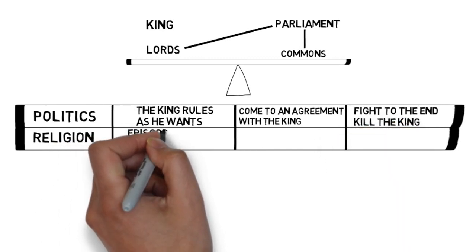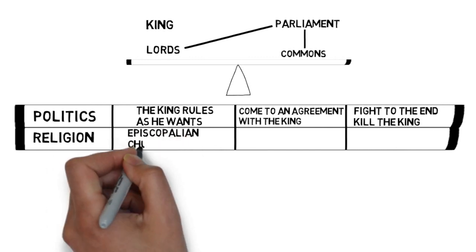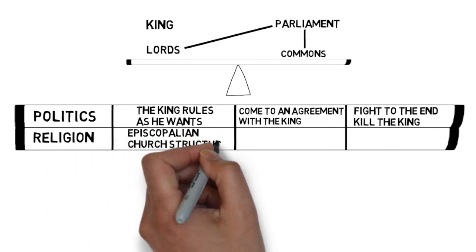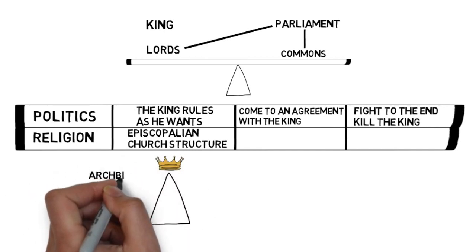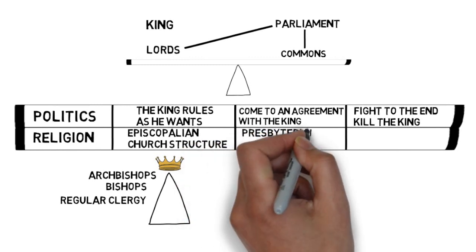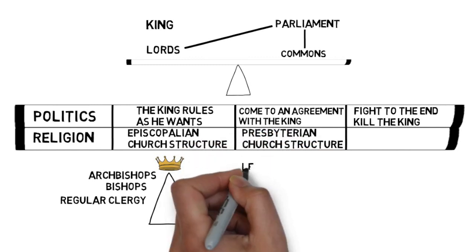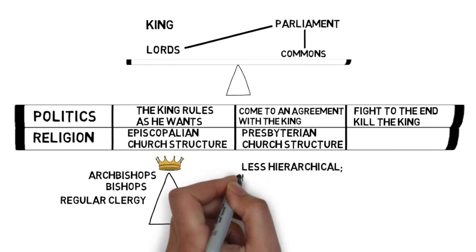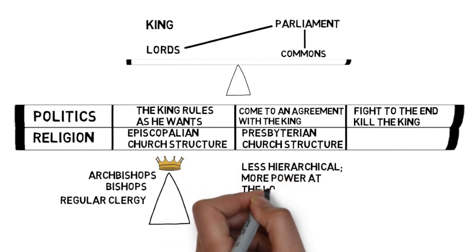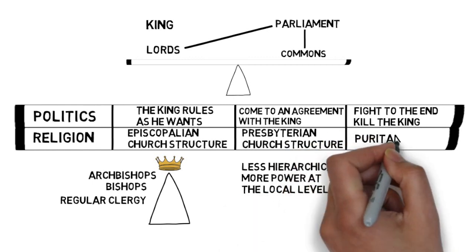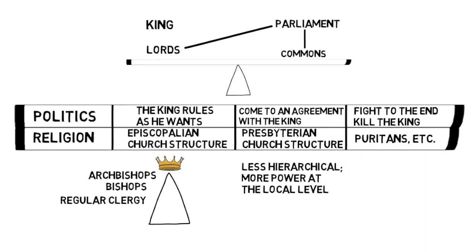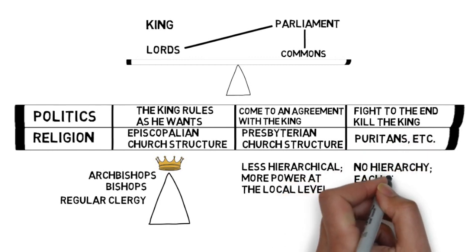Across the religious axis, the king and his supporters wanted an Episcopalian church structure — that is, a hierarchy based on archbishops and bishops, with the king at the top. The more moderate parliamentary faction wanted a Presbyterian church structure, which is still hierarchical but gives more grassroots power to those at the lower level — they get to vote for who's in the higher position. And the Puritans, being the more extreme faction, wanted effectively no hierarchy at all.